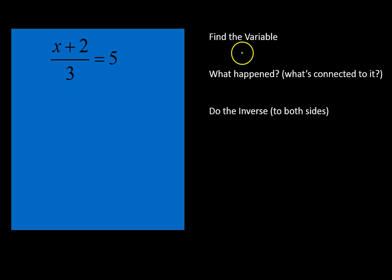Our first equation is x plus 2 over 3 equals 5. We're going to follow the same exact steps that we follow while solving for variables inside of equations. First we find the variable—in this case, it's x right there. We ask ourselves what happened to it or what is connected to it, and there are two things connected to x: plus 2, and then divided by 3.